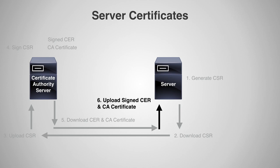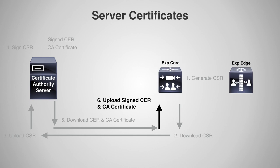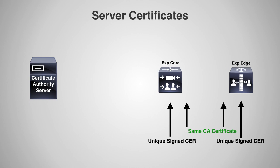When talking about setting up MRA, we have to remember that we actually have two servers — an Expressway Core and an Expressway Edge. So this means we have to go through all of these steps twice, one for each server. However, since we're going to use the same certificate authority server for both the Core and Edge servers, I can use the same CA certificate. So on the second pass, I don't have to download a new one from the certificate server — I can just use the same CA certificate downloaded in the first pass. If none of this makes sense, don't worry — you'll see exactly what I'm talking about in the next video.